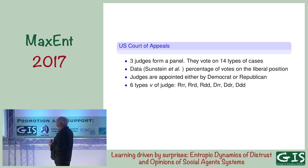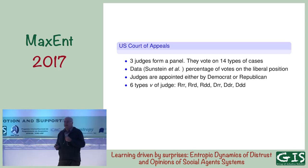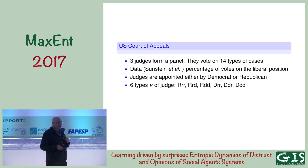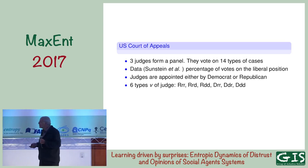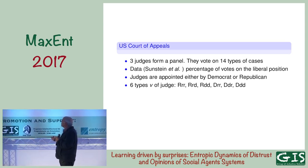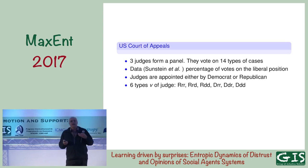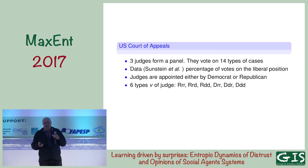Now let's go to the appellate court. I have three judges forming a panel. They vote on 14 cases. I have data from a book by Cass Sunstein, which gives the percentage of votes on the liberal position by each judge — he gives the average — by each judge on these 14 types of cases, ranging from very ideological to very non-ideological.